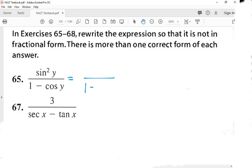The first one, you keep the bottom the same, and the top, I'm going to do a little business with. One minus cosine squared y. Why?